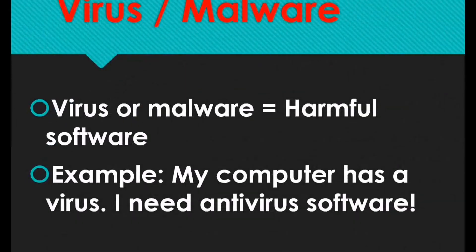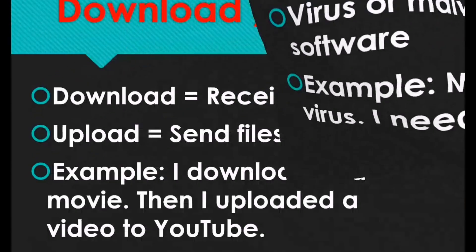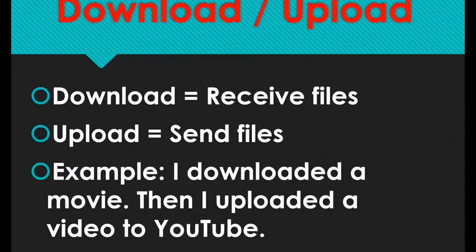The next one is virus and malware. Virus or malware are harmful to your software. For example, my computer has a virus — I need antivirus software. It's always important for you to have an antivirus on your computer or any of your devices, because if you don't, you might lose your data when it's been attacked by a virus. So always try to have it.